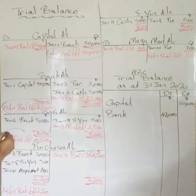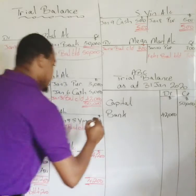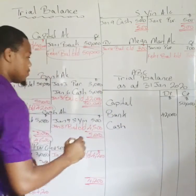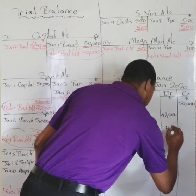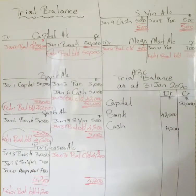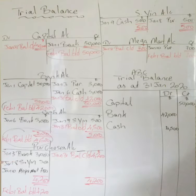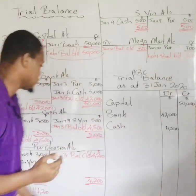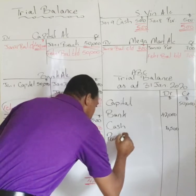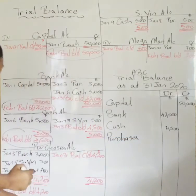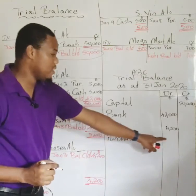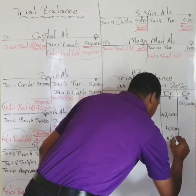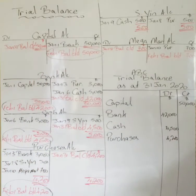For the cash account, the balance brought down is on the debit side, so we place $4,500 on the debit side of the trial balance. For the purchases account — which is another account that normally carries a debit balance, so you will always see it in the debit column — the balance brought down is on the debit side for $4,200, so we place it on the debit side.